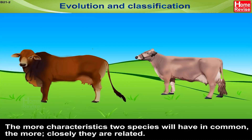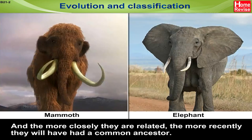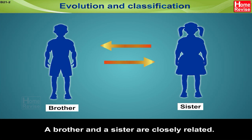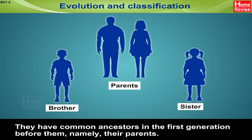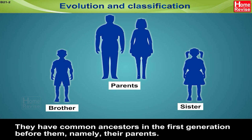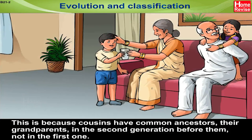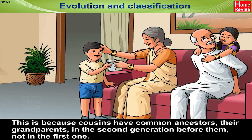The more characteristics two species have in common, the more closely they are related. And the more closely they are related, the more recently they will have had a common ancestor. For example, a brother and a sister are closely related — they have common ancestors in the first generation before them, namely their parents. A girl and her first cousin are also related, but less so, because cousins have common ancestors — their grandparents — in the second generation, not the first.